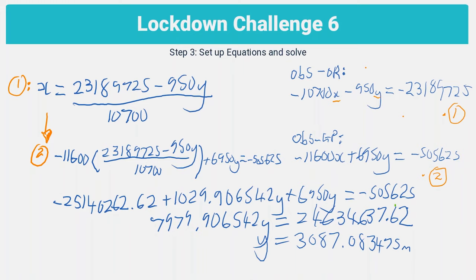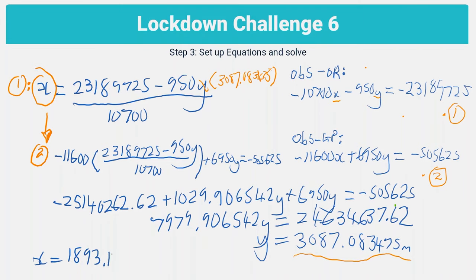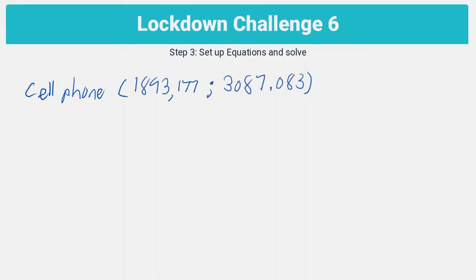To solve for x, I substitute y = 3,087.083475 into the equation for x, giving x = 1,893.177168 meters. Rounding to three decimal places, the coordinates of the cell phone are x = 1893.177 meters and y = 3087.083 meters. That answers question one.